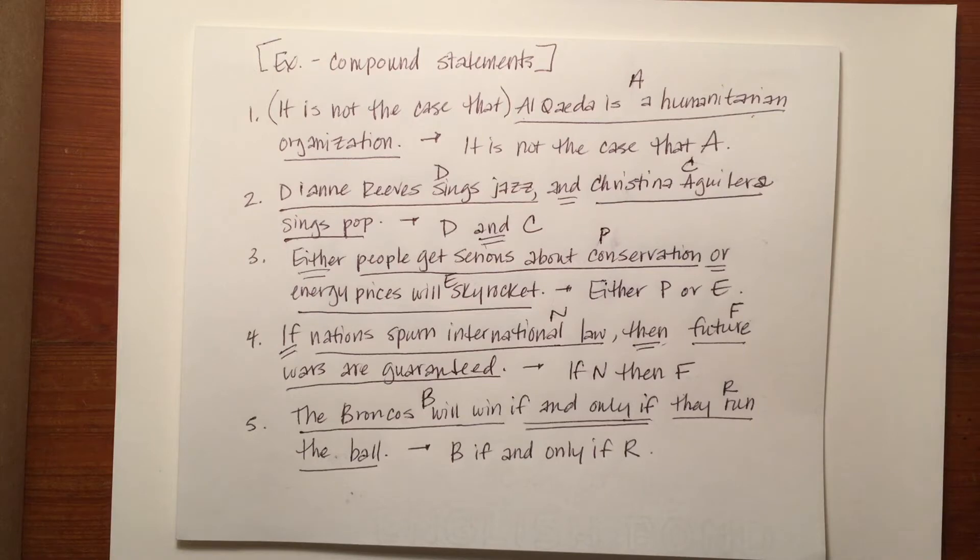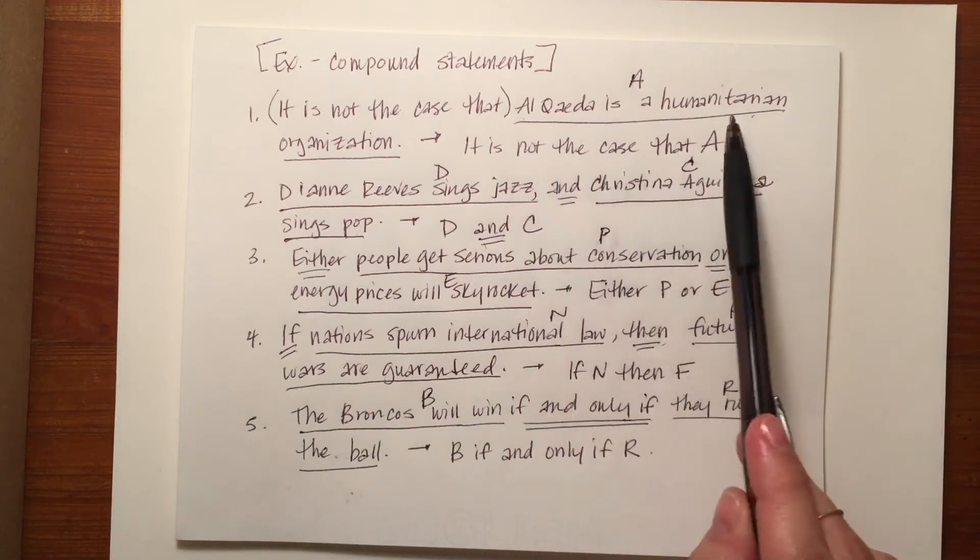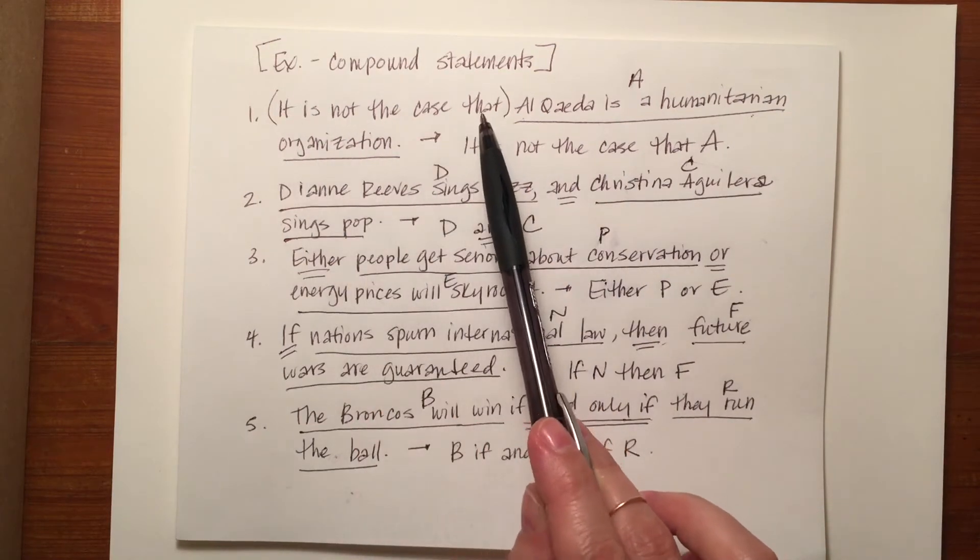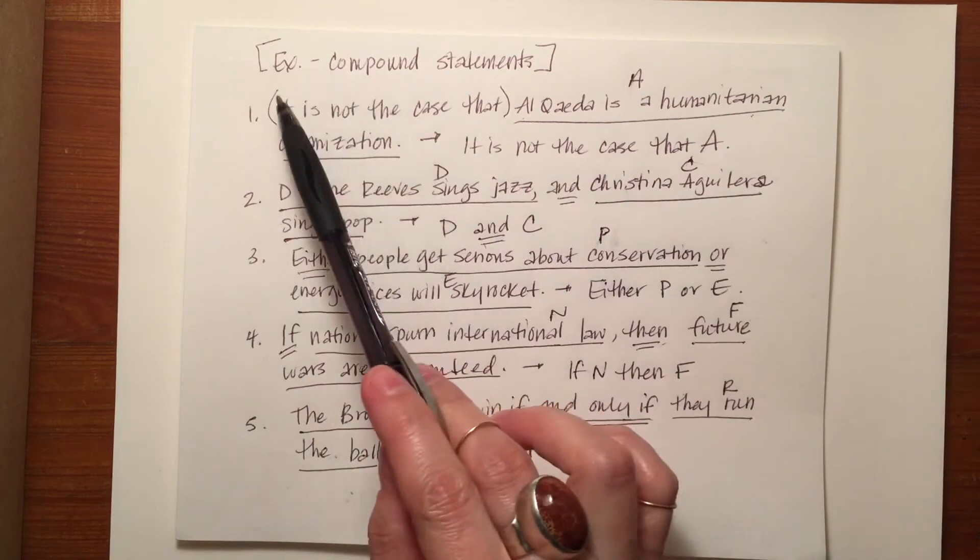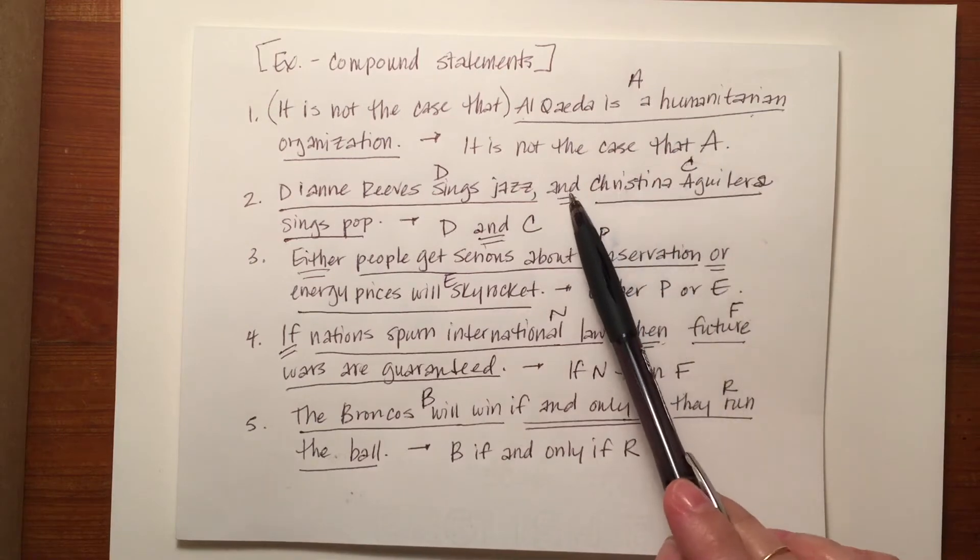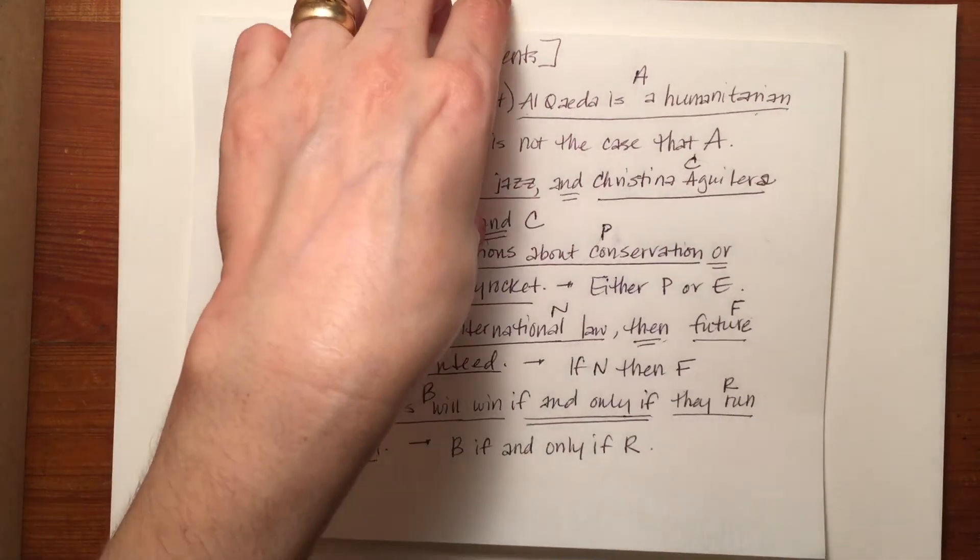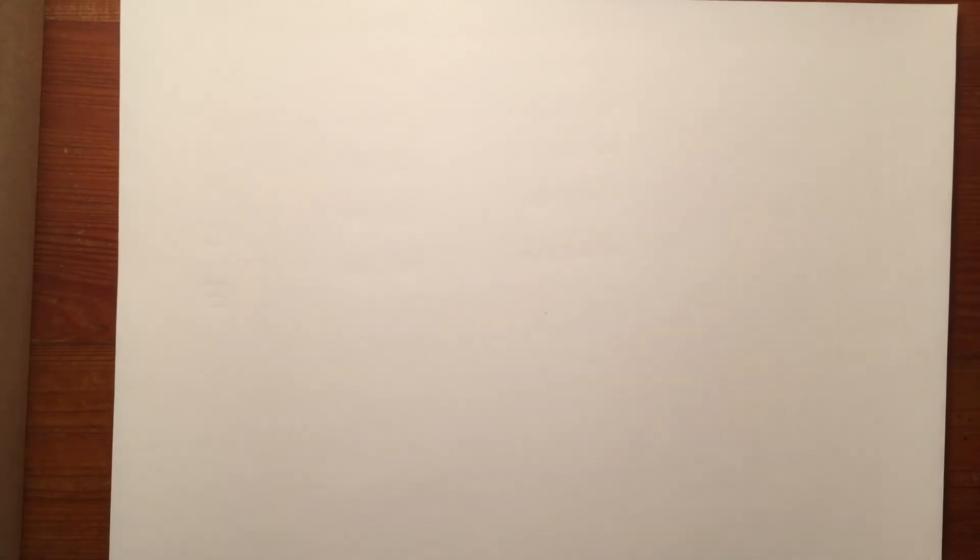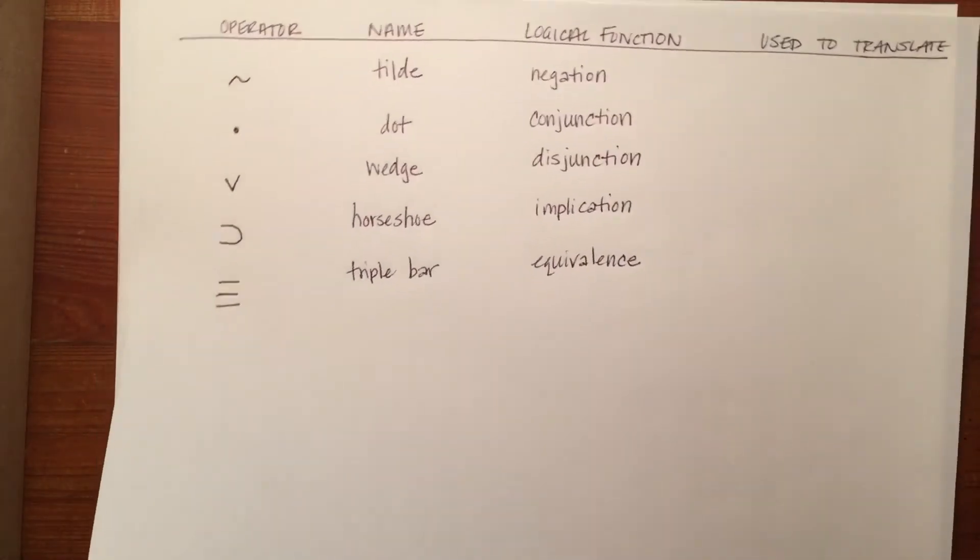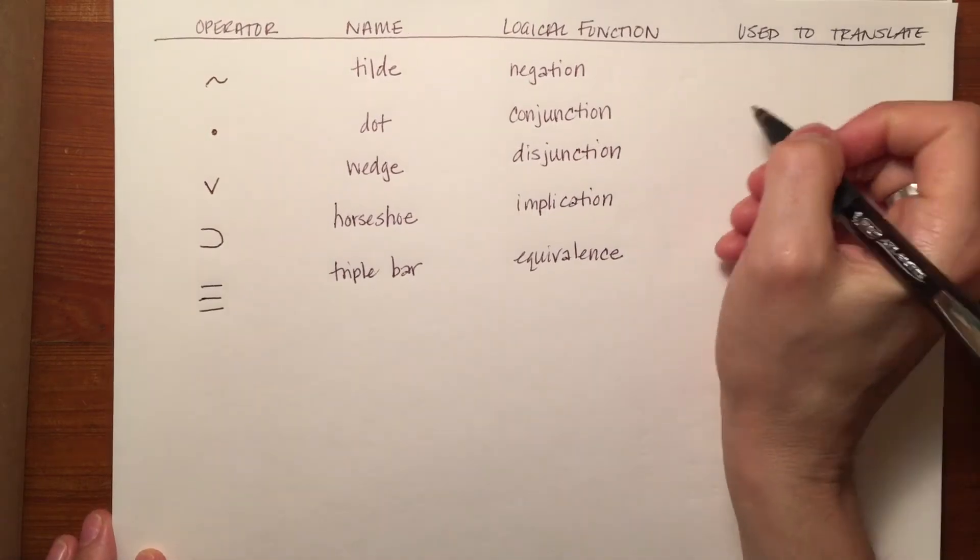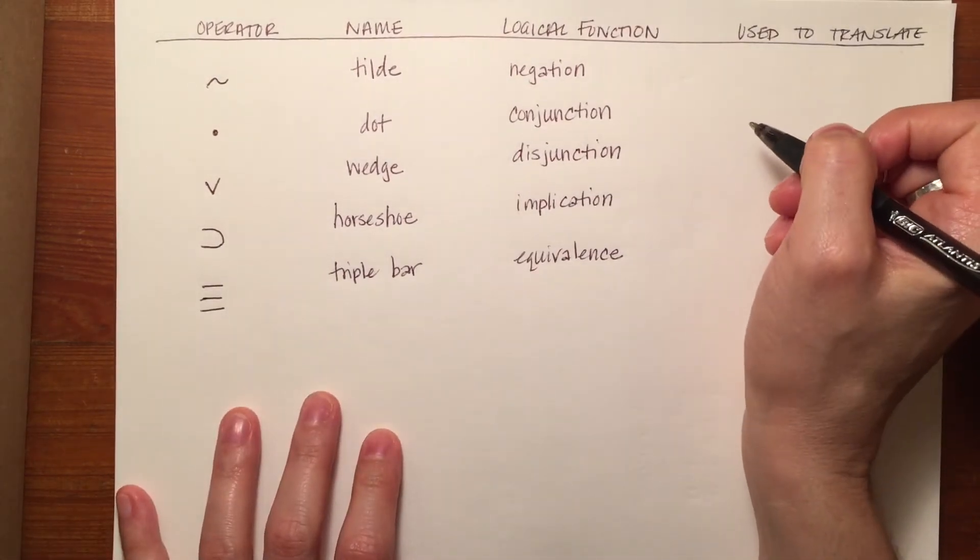However, you'll notice that we only symbolized what looked like entire statements. We did not symbolize these other expressions. We did not symbolize 'it is not the case that,' 'and,' 'either or,' 'if then,' or 'if and only if.' That's because each one of those statements can be translated not by replacing it with a letter to refer to it but by one of the logical operators.